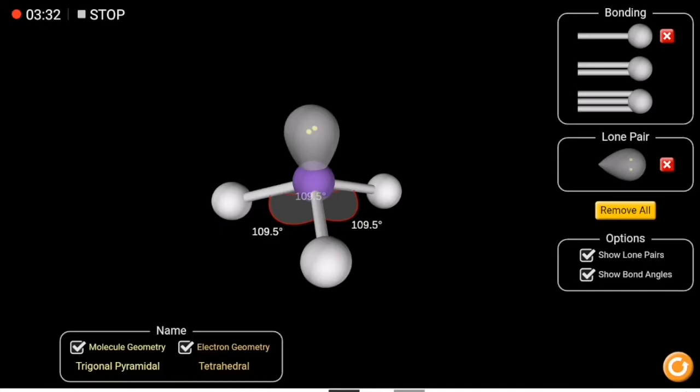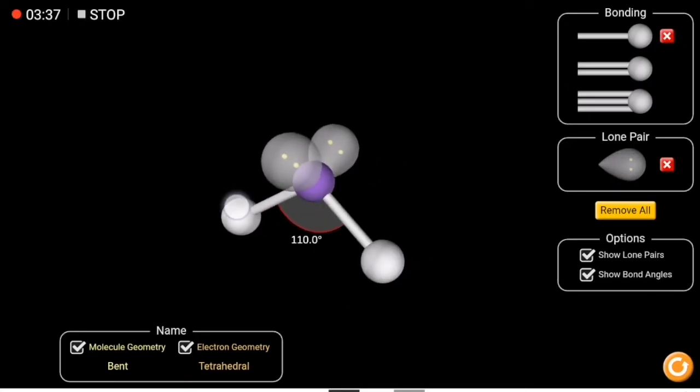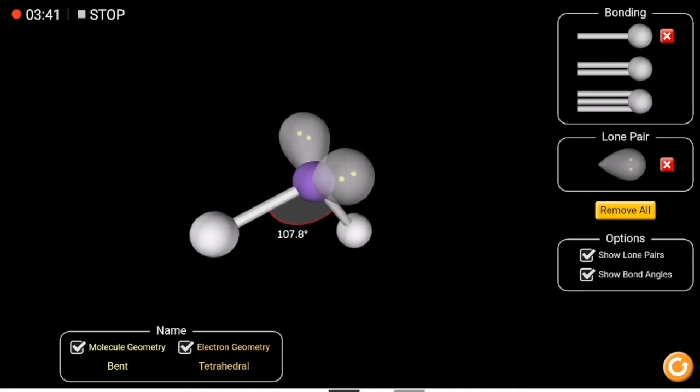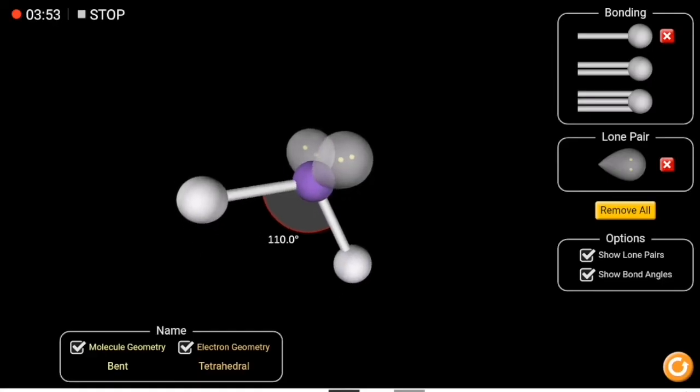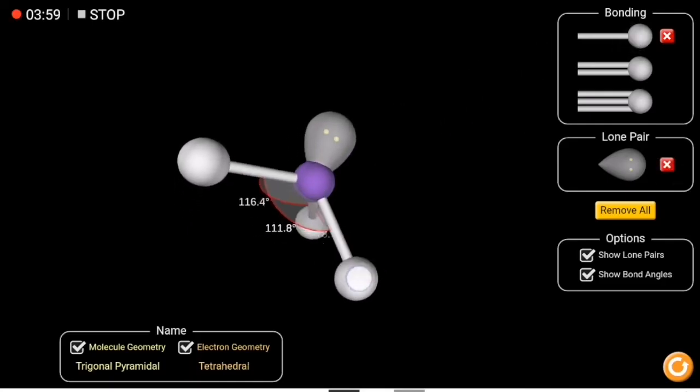Now if I replace another bonding atom with a lone pair, you can see now the shape is bent and the angle is less than 109.7. It's 104.5. The electron geometry is still tetrahedral but the shape now is bent. A good example of this could be H2O and a good example of the previous one is NH3.